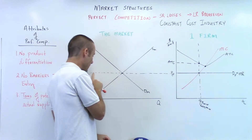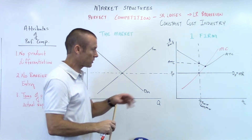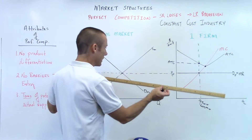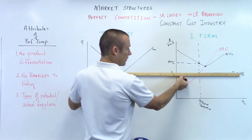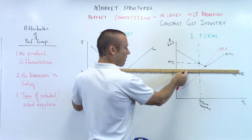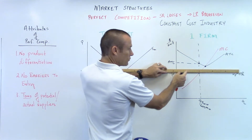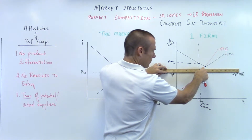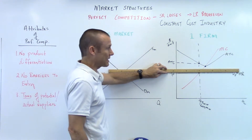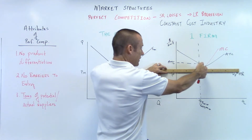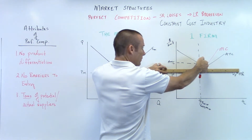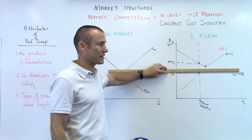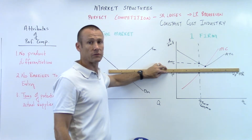As supply shifts left, price market's going up. Let's say we get to right there — is that far enough? No, it's not far enough. Where the top of my ruler hits the MC — think vertically — go vertically up to the ATC line and we would still be incurring losses. So that's not how far we're going to shift the supply curve; we're going to shift it further.